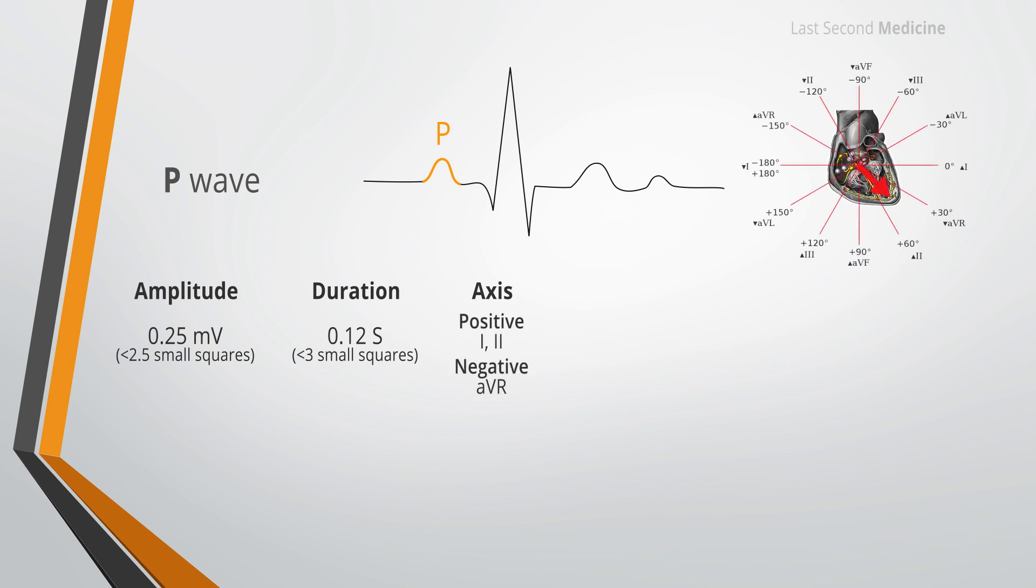And thus the P wave tends to be upright in lead 1 and lead 2 and it is inverted in lead AVR. Sinus P waves are usually most prominently seen in lead 2 and V1.